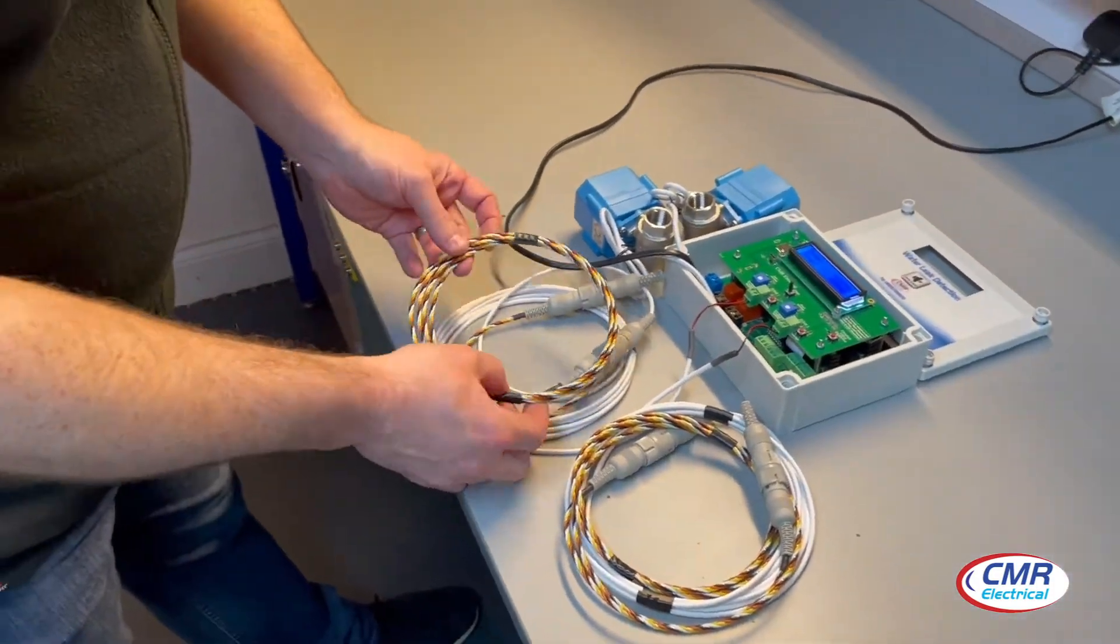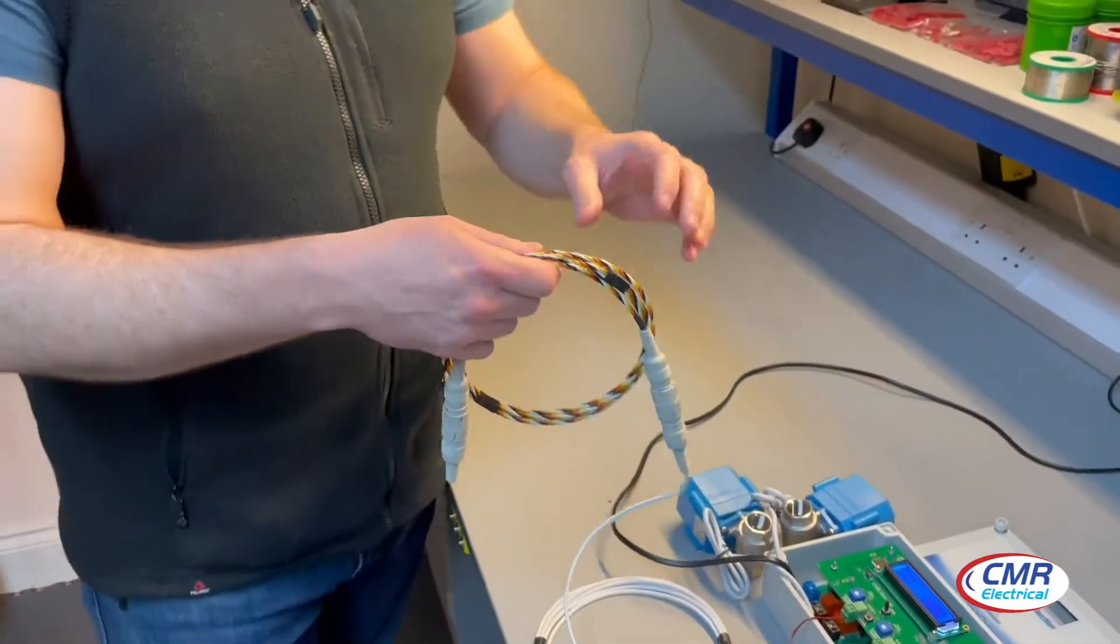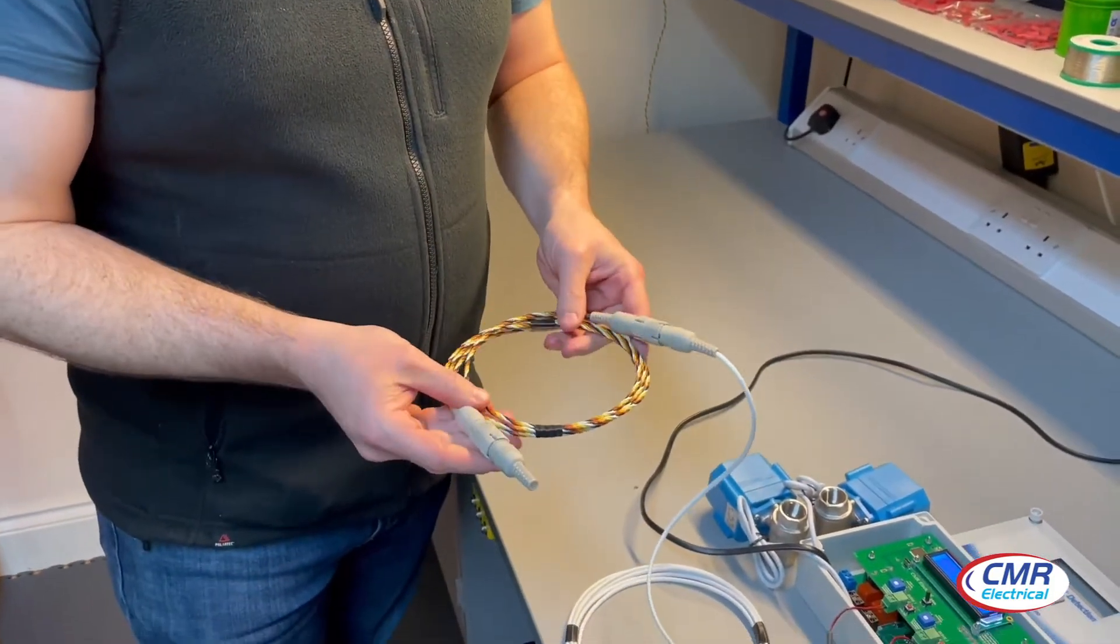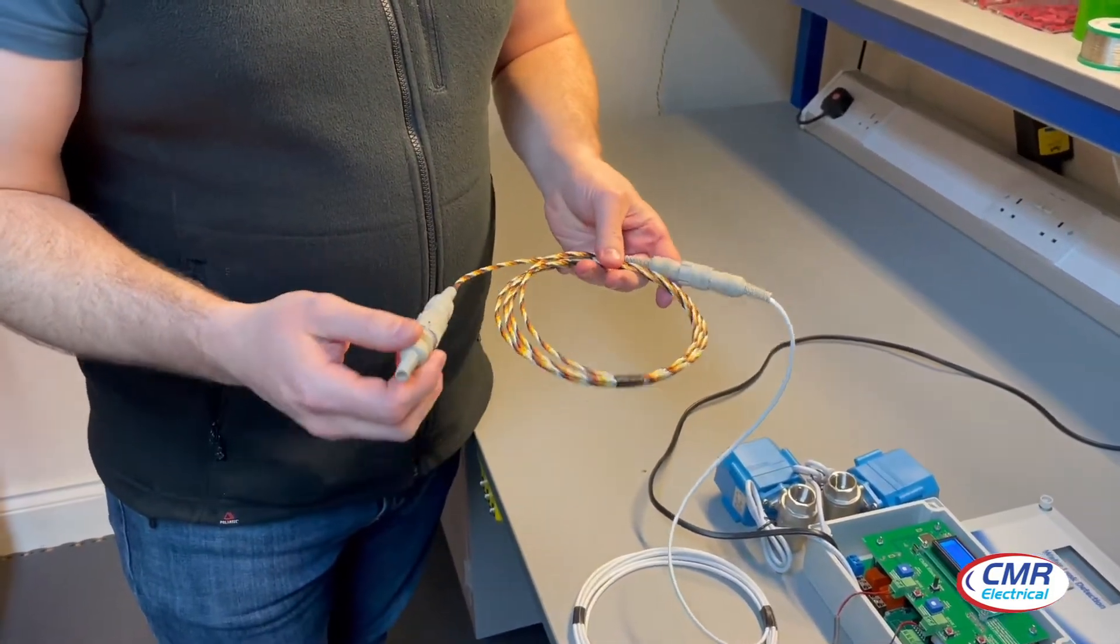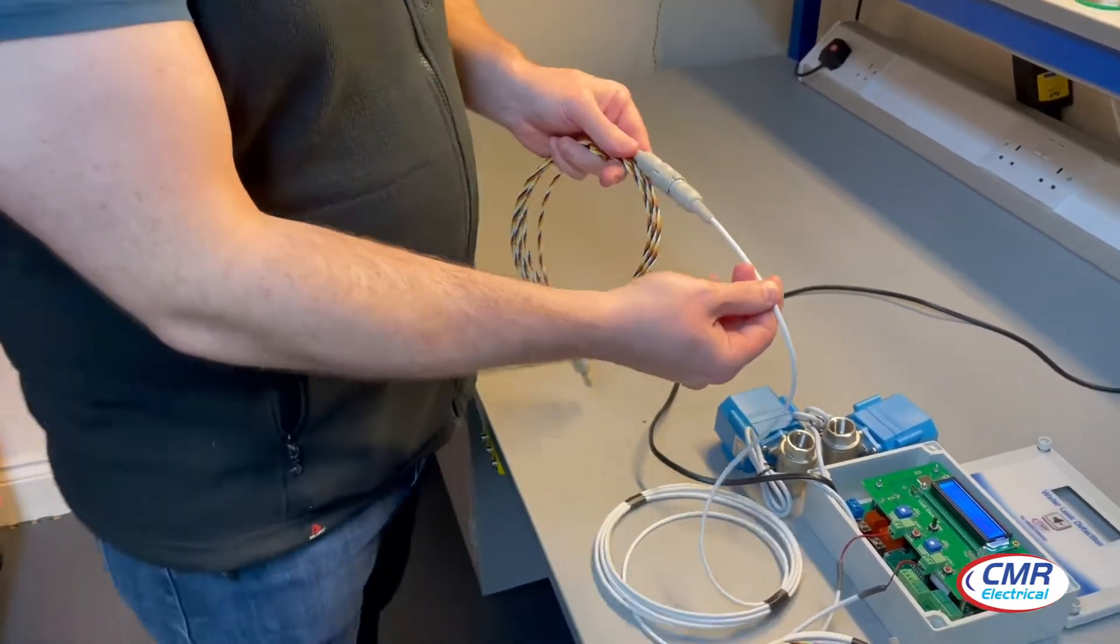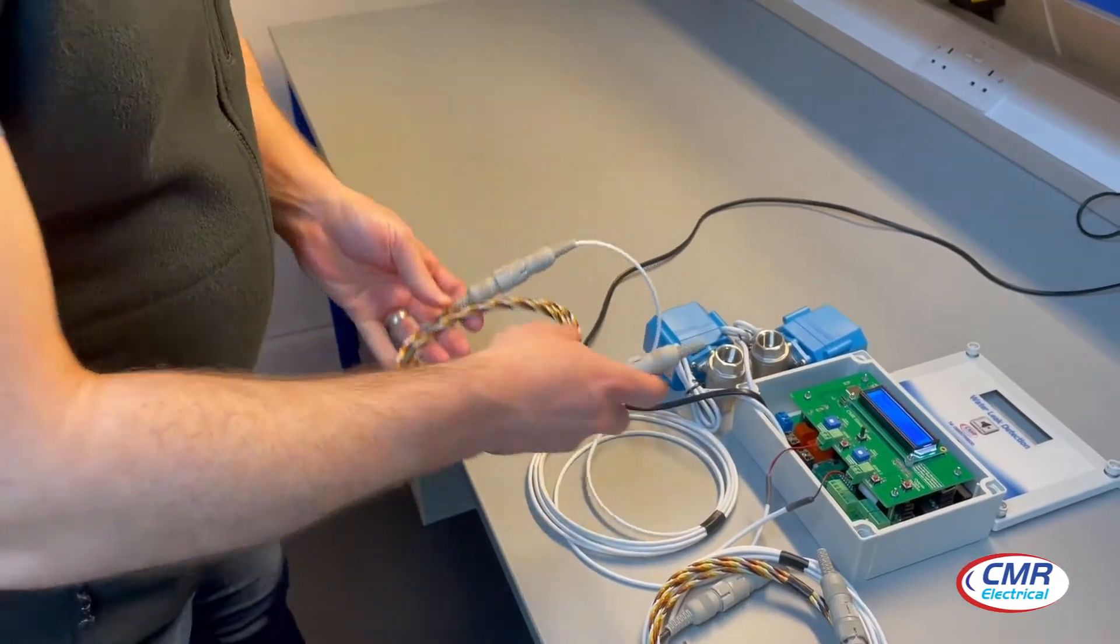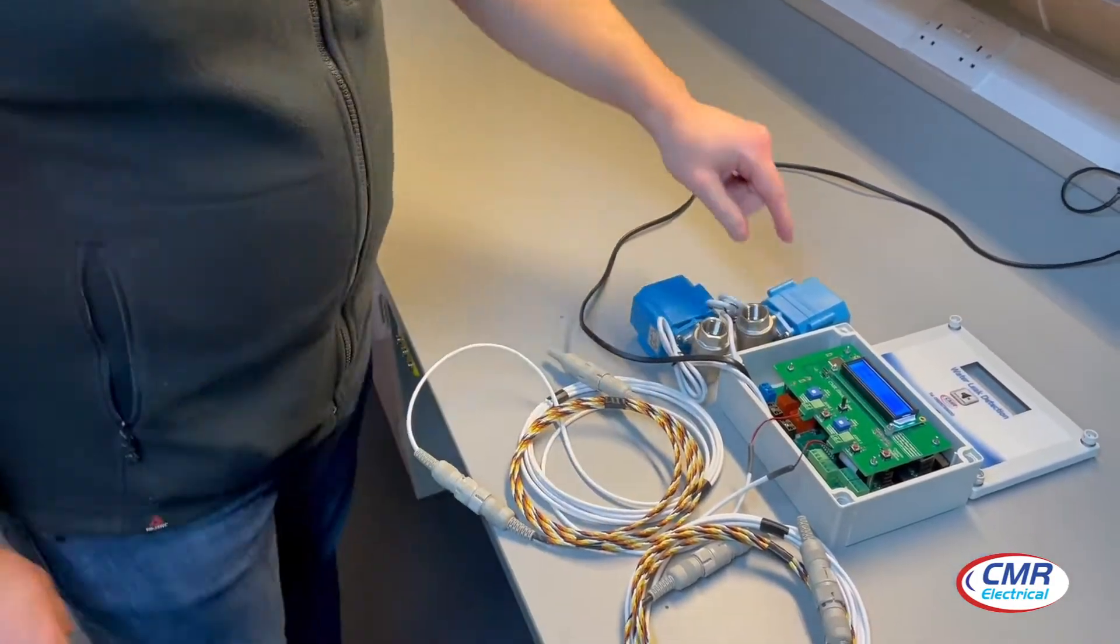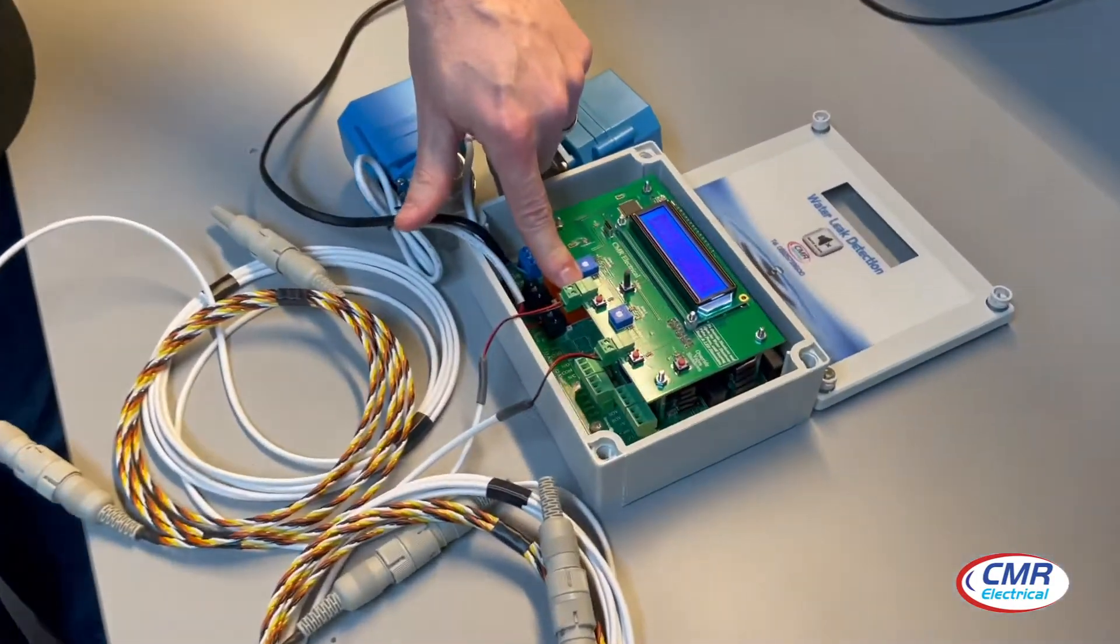We'll start off with the detection cables. This is a detection cable. It's a four-core multi-colored leak detection cable. It has an end of line which plugs from the end of here and connects to a white signal cable, which is a two-core signal cable that connects into a two-way terminal block here.